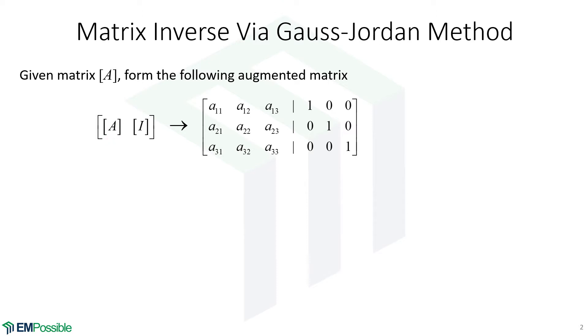The first thing we'll do is form this augmented matrix. We have our matrix A right next to the identity matrix of the same size. Here is our augmented matrix. This is a three by three, so we can see all the elements. We also have a three by three identity matrix.